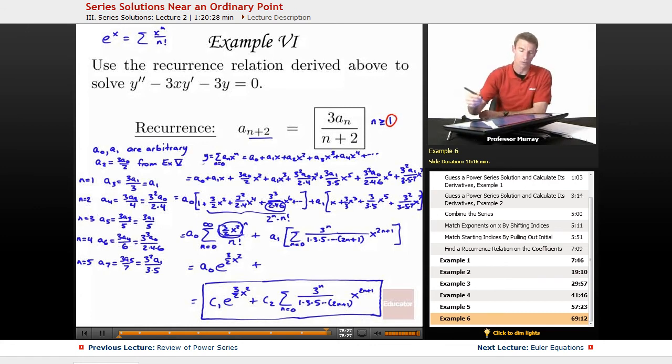Let me recap how we derived that. We started out with this recurrence relation that we had from example 5. There's no way you would have predicted that without having worked through example 5. We also had this expression about A2 in terms of A0 from example 5. Now, nothing here told us what A0 and A1 were, so we had to leave those arbitrary.